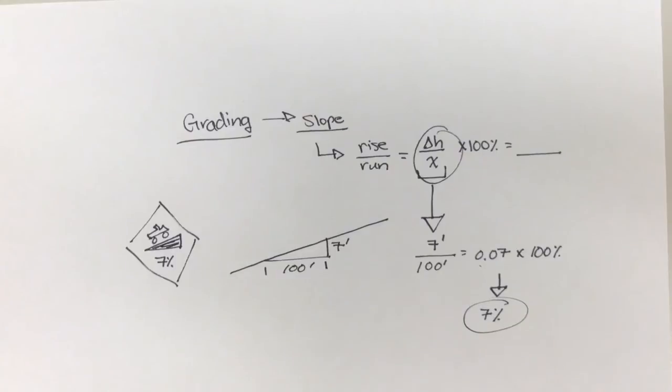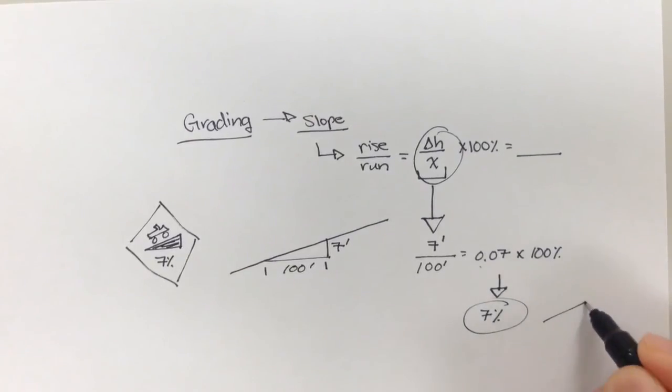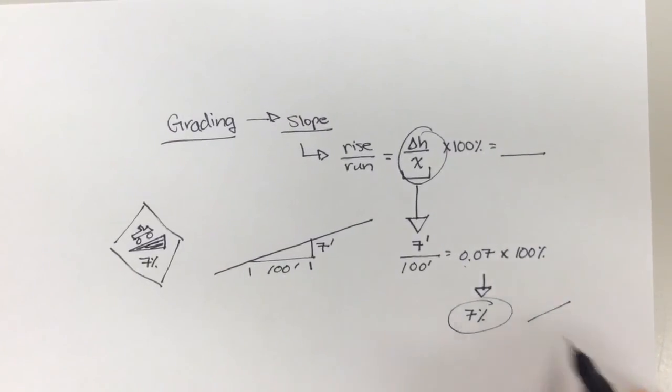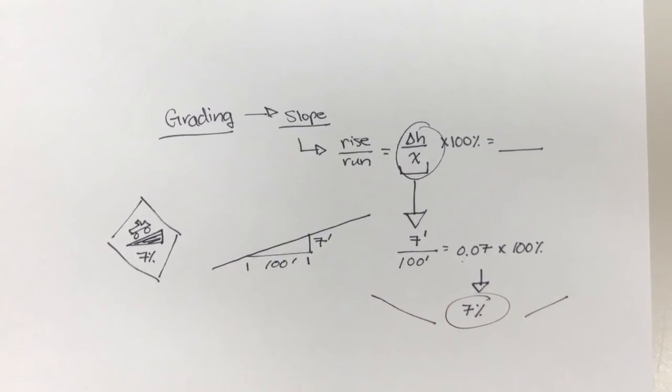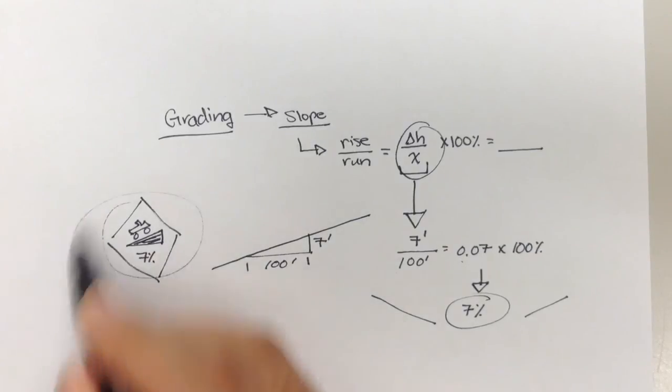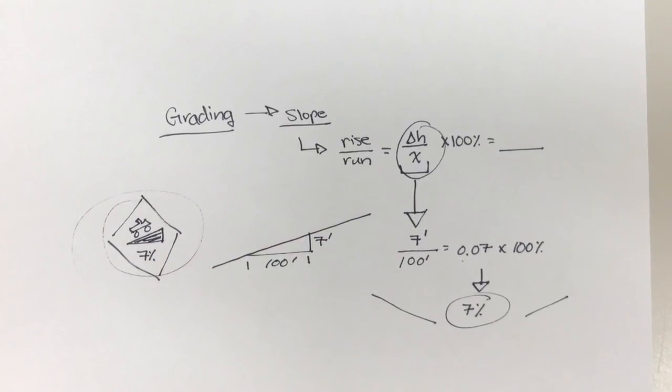So that was kind of the basic definitions of what grading is, what slope is. So I guess one quick real-world example. So I think in the next video, we'll look at grading and how it applies to advanced geomatics or advanced survey, and how this is going to be used for vertical curves. All right, see you then.